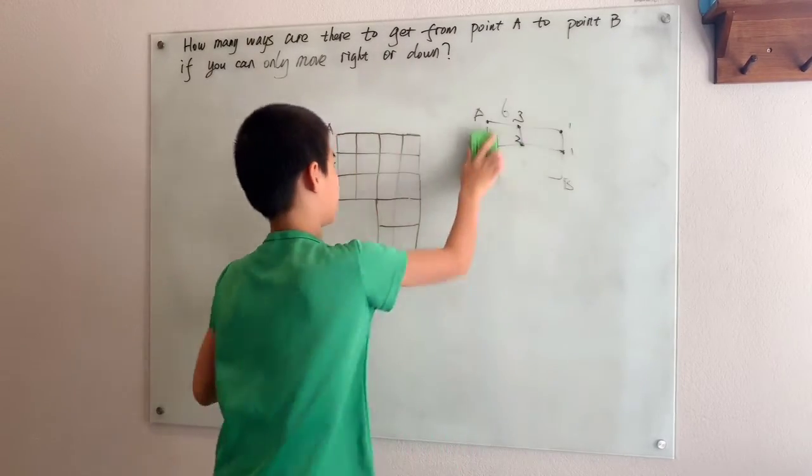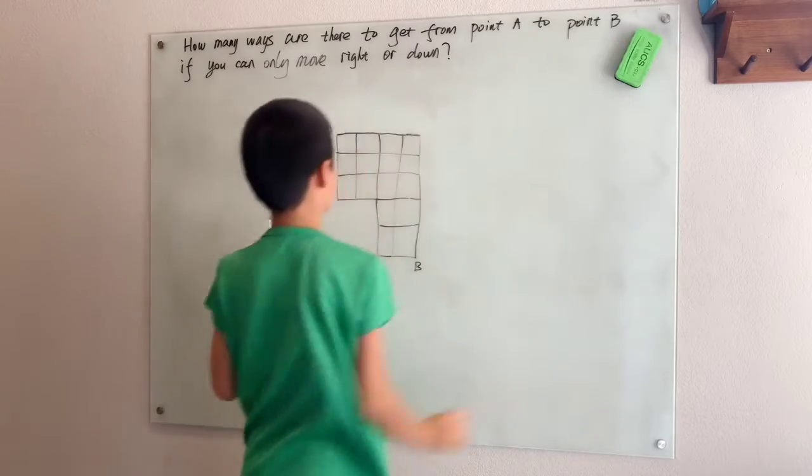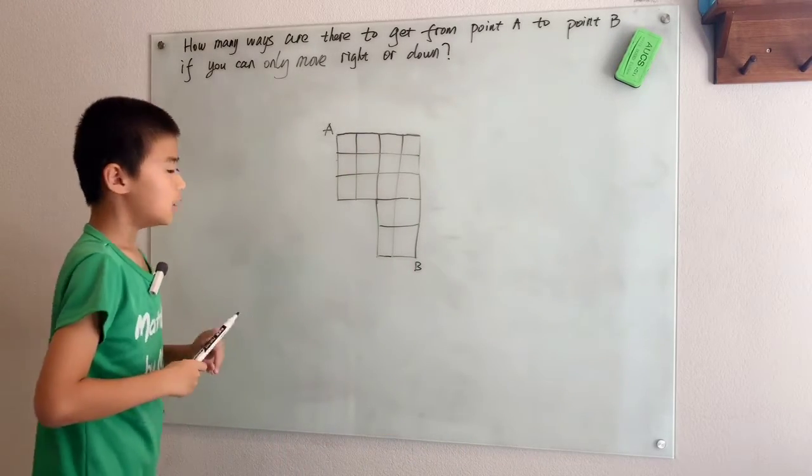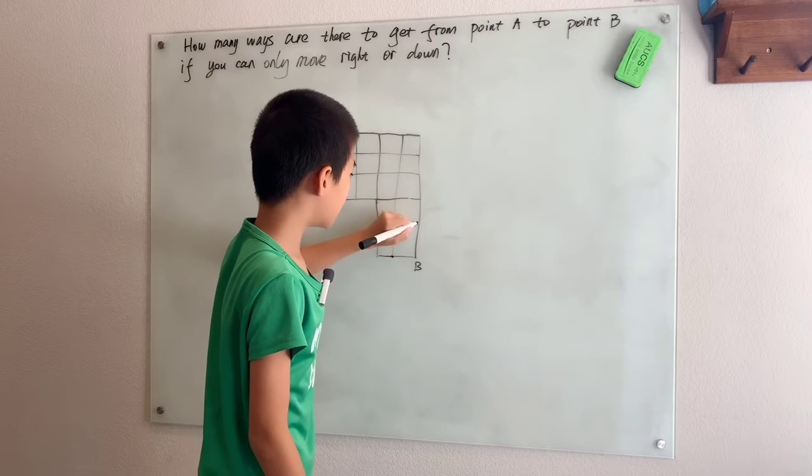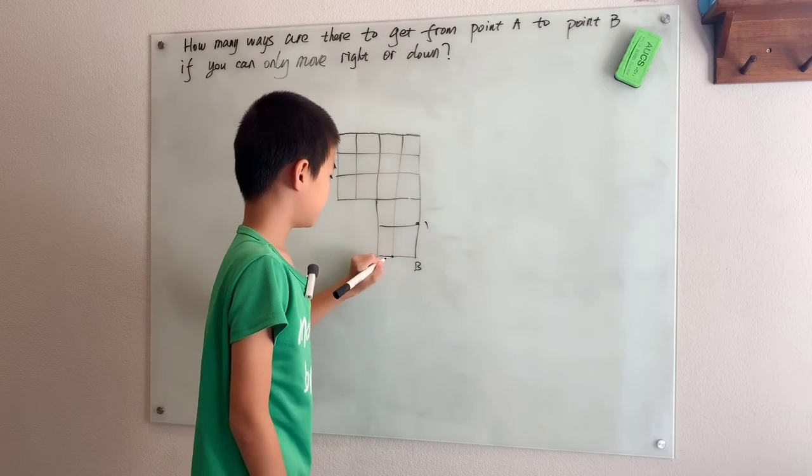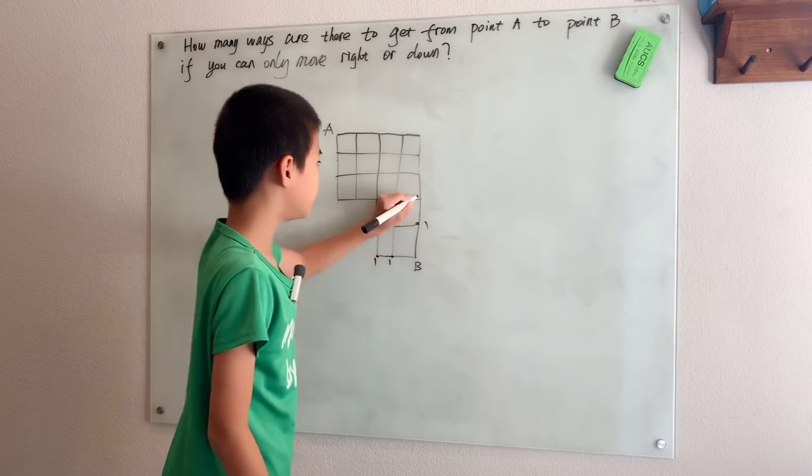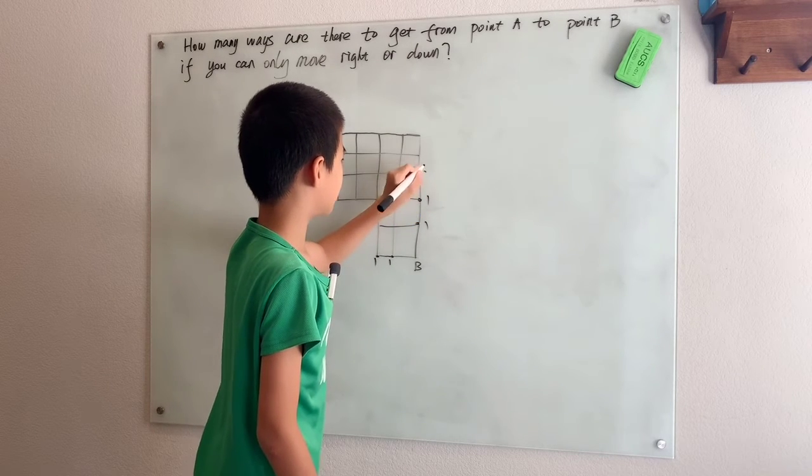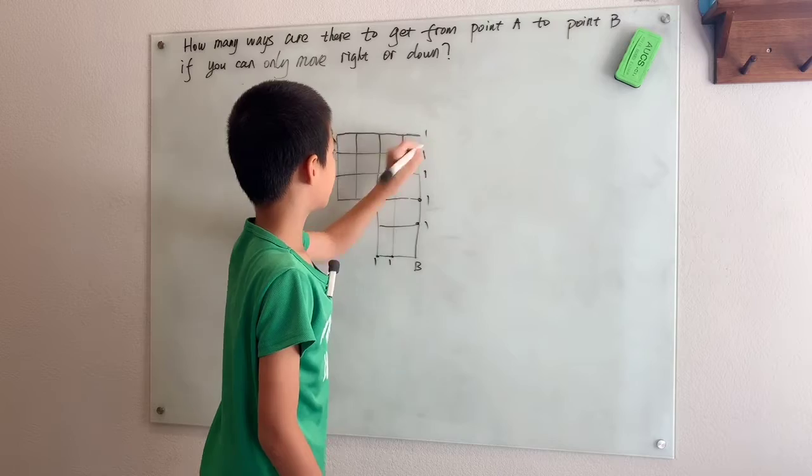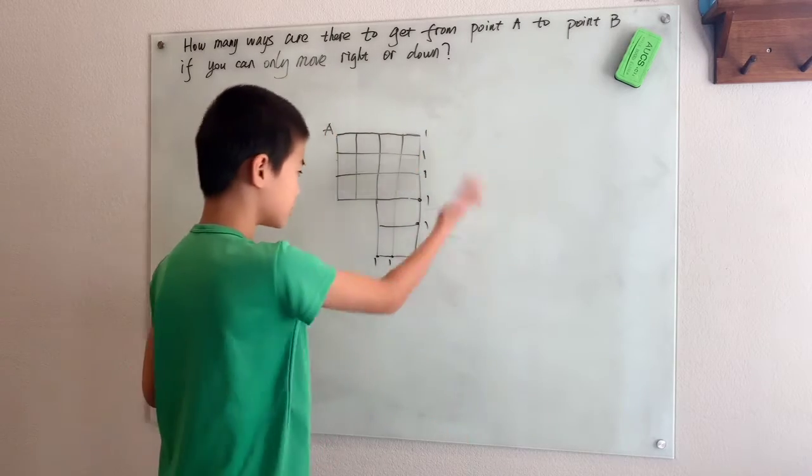So that gives us an idea about how to solve this problem here. We can do the same thing. Because again if A was over here, there's only one way to get back. If it was here, there's also only one way. And same goes with everything along this edge. There's only one way to get back.